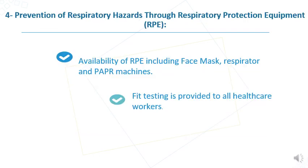The fourth element of the Respiratory Protection Program is prevention of respiratory hazards through respiratory protection equipment. This covers the overall availability of respiratory protection equipment including face masks, respirators, and powered air-purifying respirators. Fit testing is also provided to all healthcare workers.